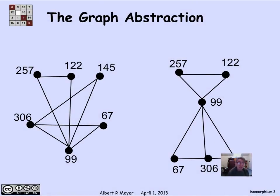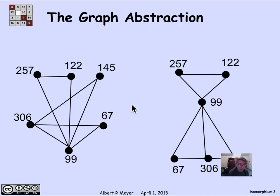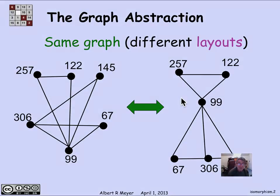This is an example of two different ways of drawing the same graph. Here's a vertex 257, and there's 257. It's connected directly to 122, as here. Also, 257 is connected to 99, as here. If you check, it's exactly the same six vertices and exactly the same eight edges, but they're just drawn differently. So we don't want to confuse a drawing of a graph with the graph itself. The graph itself consists of just the set of nodes and the set of edges, and if you extracted that from these two diagrams, you would get the same set of nodes and the same set of edges. So: same graph, different layouts.